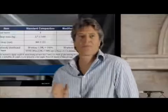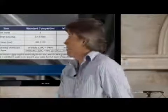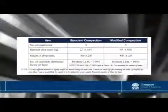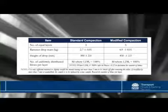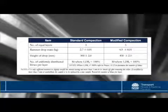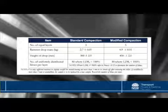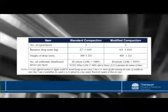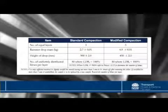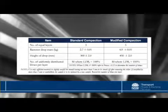So take us through the table. This specifies that we compact into three layers using our 2.7 kilo rammer from the 300 millimetre height, and for this 2 litre mould, we'll need 50 uniformly distributed blows per layer.